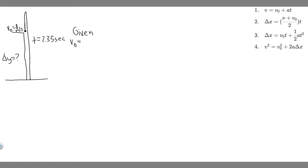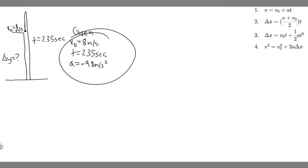Let's write down the given. We know the initial velocity is 8 meters per second. When doing problems like this, you want to label things with a negative or positive sign depending on direction. Since it's 8 meters per second going upwards, we keep it positive — up is positive, down is negative. So the initial velocity is +8 m/s. Time is just 2.35 seconds. The acceleration, which they don't give you but you're supposed to know, is 9.8 m/s² downward, so it's negative: -9.8 m/s².